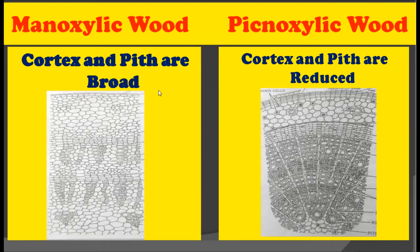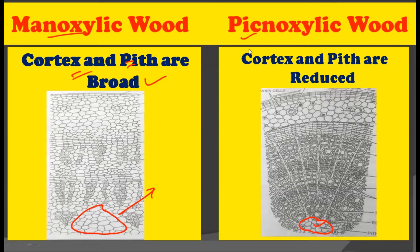The second difference is that the cortex and pith are very broad in Manoxylic wood. As you can see in the diagram, the cortex plus the pith is very large or very broad in Manoxylic wood. On the other hand, in the second diagram, you can see that the pith and the cortex are very much reduced in Pachyxylic wood. This is a very important anatomical difference between the two.